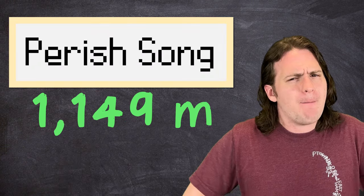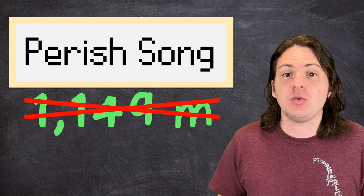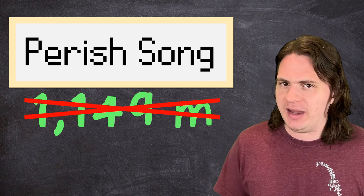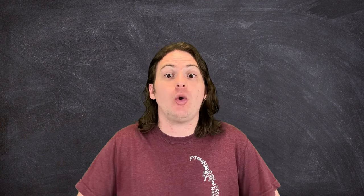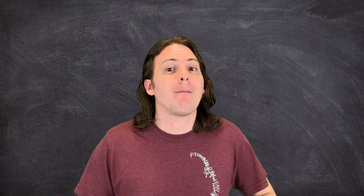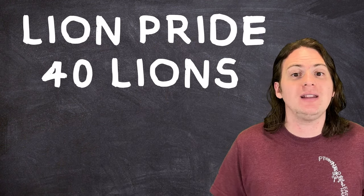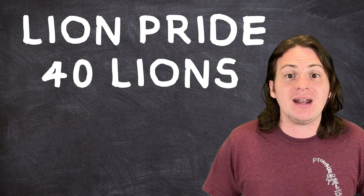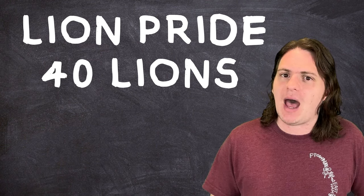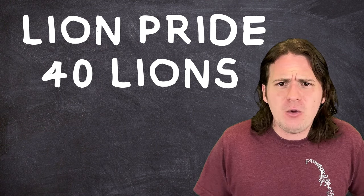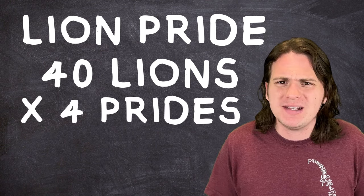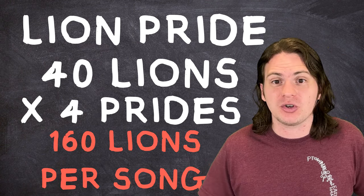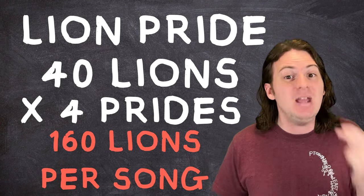But the important thing is this, the sound of a Perish Song probably won't actually reach the 1149 meter mark that we calculated. There's also the problem of lion density. This is assuming that lions are basically grouping up for these Perish Songs like they're going to a Taylor Swift concert, which isn't very realistic. In reality, lions prefer to operate in smaller prides. A single pride can typically contain up to 40 lions that work together to maintain a very strict and sprawling territory. It's very rare to find lions of different prides peacefully occupying the same space in the wild.